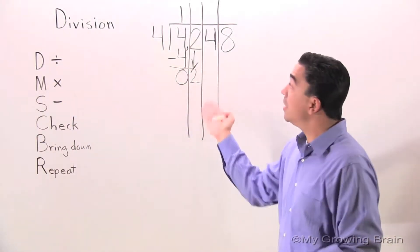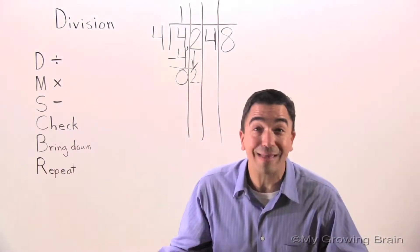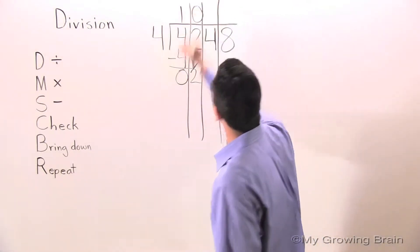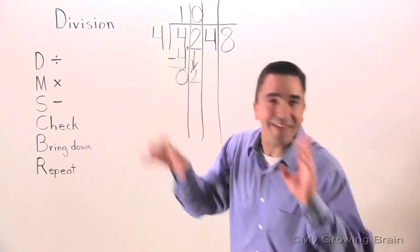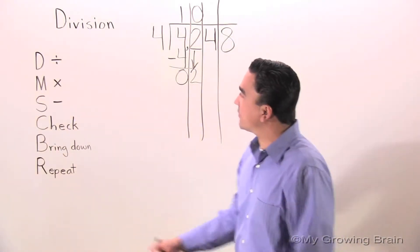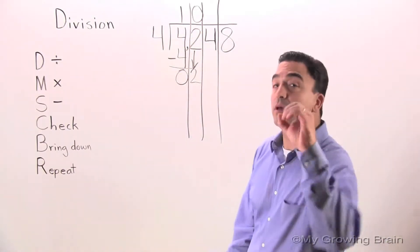Divide. 2 divided by 4, or 4 into 2. Can't do it. Use a 0. 0 in the quotient. All right, keep on going. What's the next step? Our next step is multiply. 4 times 0 is 0.